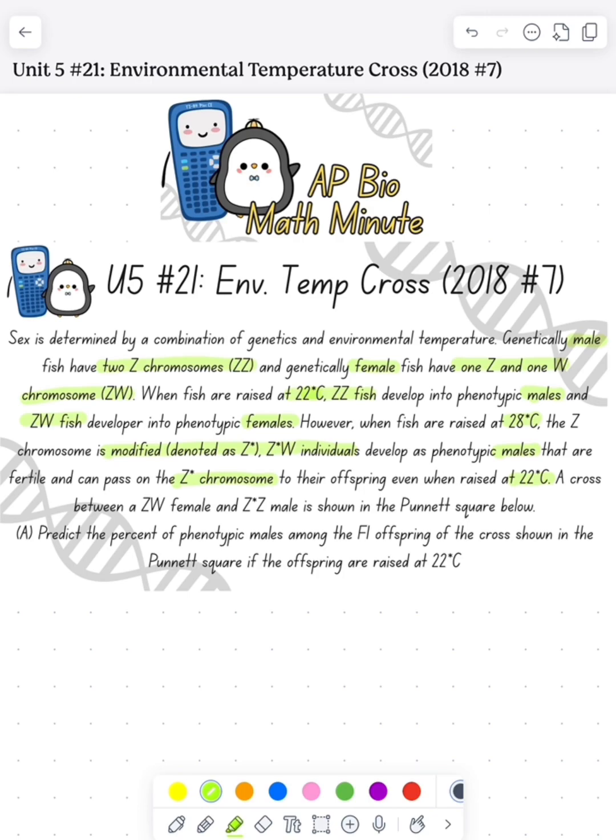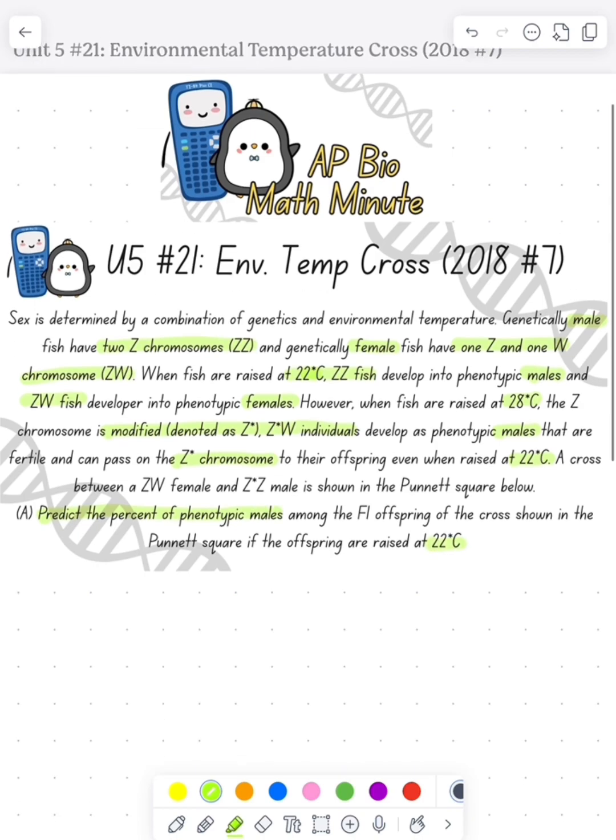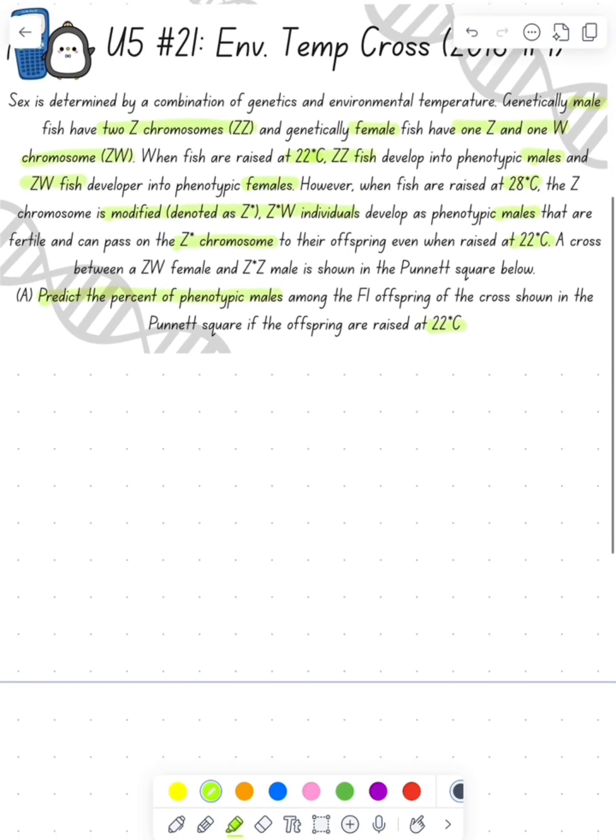That makes no sense. Anyways, let's look at part A. Part A says to predict the percent of phenotypic males amongst the F1 offspring in a cross. Let's first make a chart because that's a little complicated.